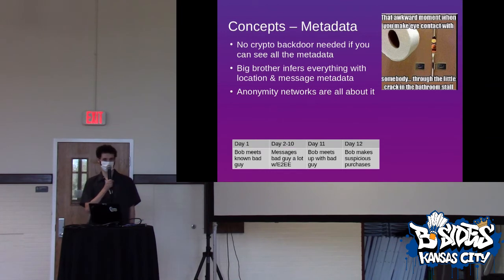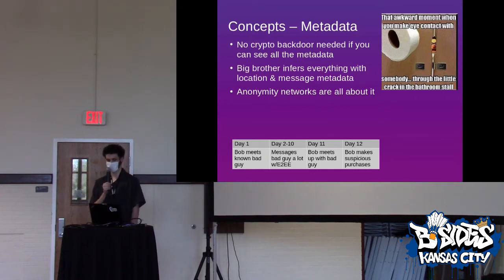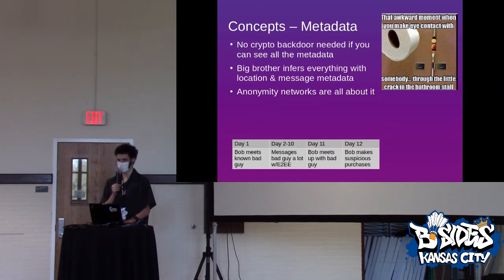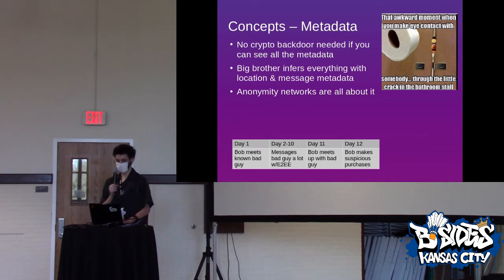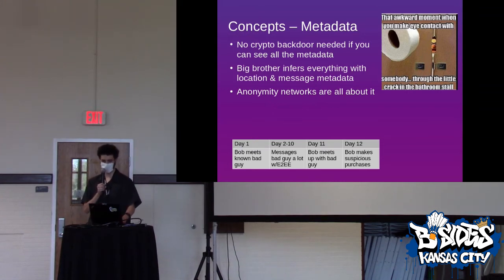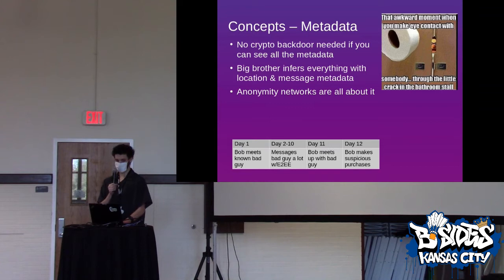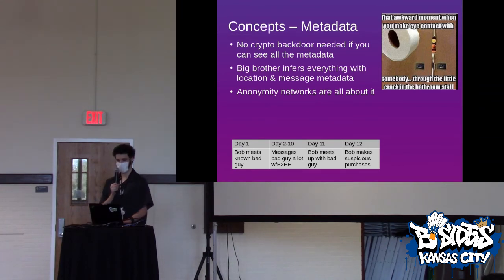Beginning with the concepts, the biggest concept you have to wrap your mind around is metadata. I think people have a basic understanding of it but they don't fully understand the ramifications as they apply to personal privacy. End-to-end encryption like Signal and WhatsApp is pretty widely supported, but that doesn't really matter because a lot can be inferred — if you have a powerful enough adversary — just from who you talk to, when and where you go, where you spend money, and things like that. Anonymity networks are really all about protecting metadata as well as data.